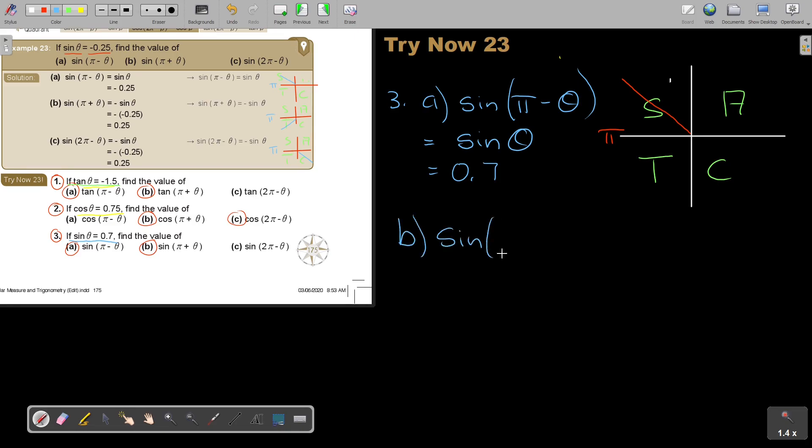It's sin pi plus theta. So where is it now? It's more than pi. It's there. And now, I say, oh, but what is sin in this quadrant? In this quadrant, it's negative. It's negative sin theta. And now, I'm just going to come and I say, so it's negative. And I substitute 0.7. And it's actually just negative 0.7. And that will be my final.